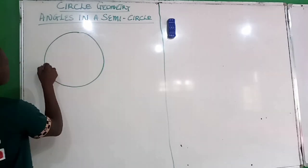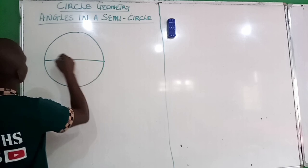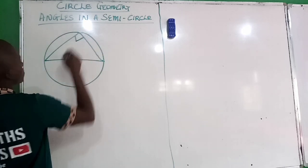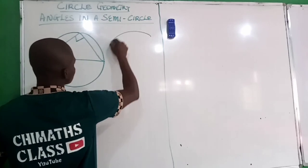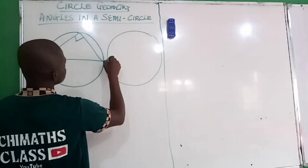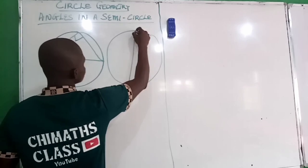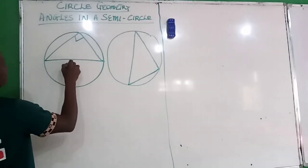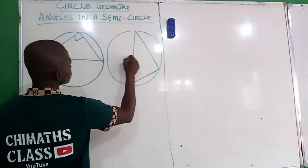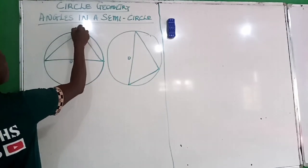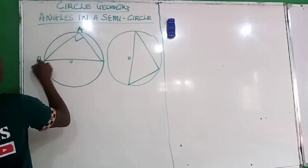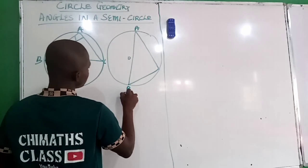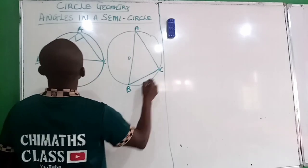Let's say we have something like this — this is the semicircle. And we have another semicircle like this. If here is the center and here is also the center, let's say we have A, B, and this is C. Okay, we have here also A, B, and this is C.